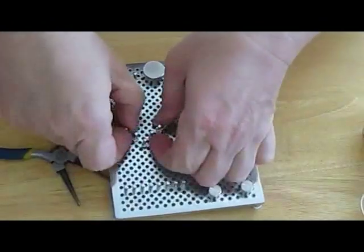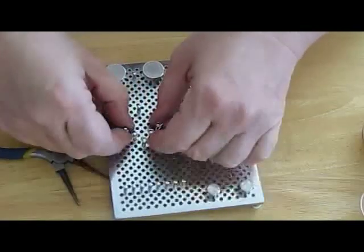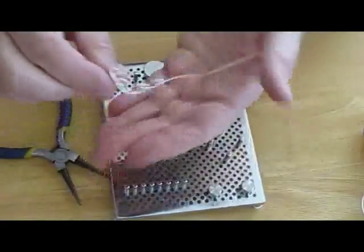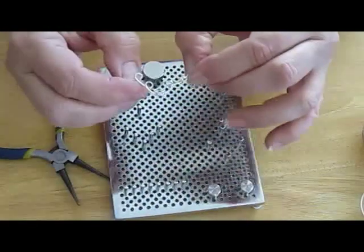Now, when you remove this from the jig, of course, you trim off the excess wire here and here.